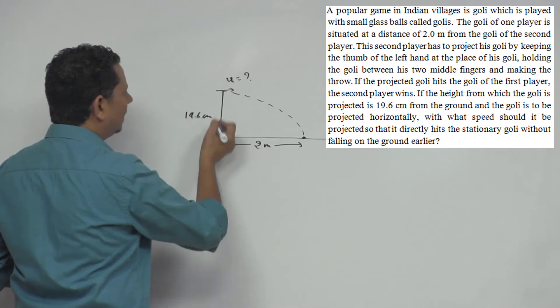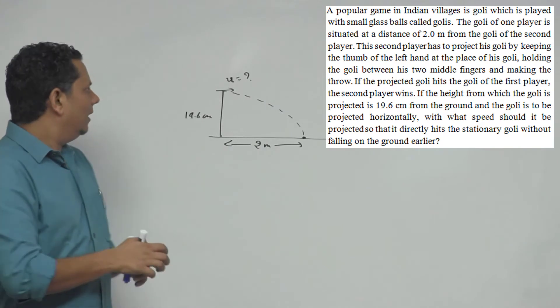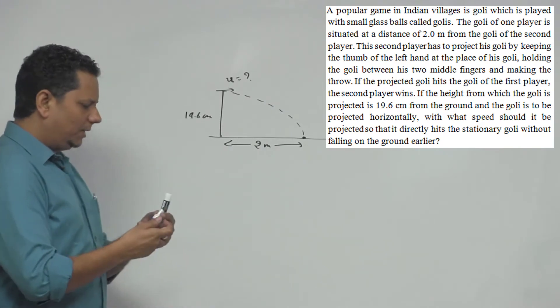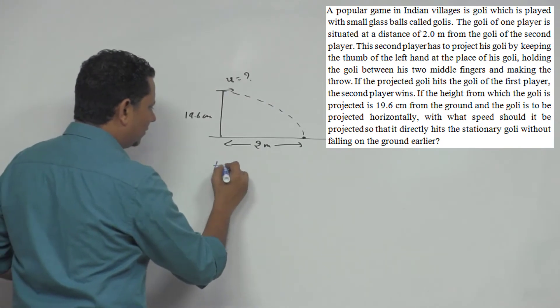the time will be equal to the square root of 2h by g.